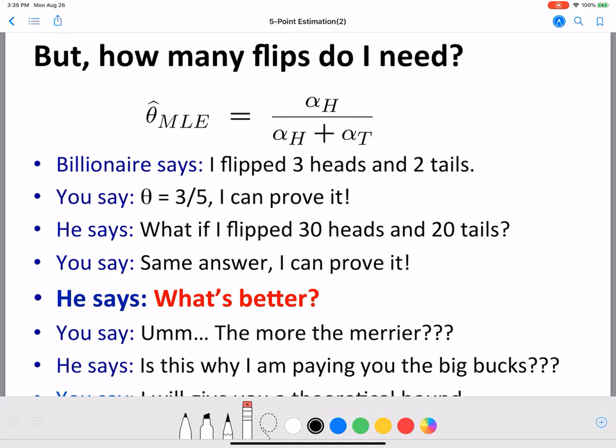So let's take the same example that we were looking at before where we derived maximum likelihood for a coin to be alpha H by alpha H plus alpha T. Alpha H is the number of heads and alpha T is number of tails.